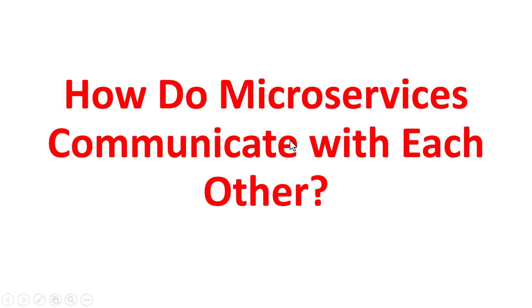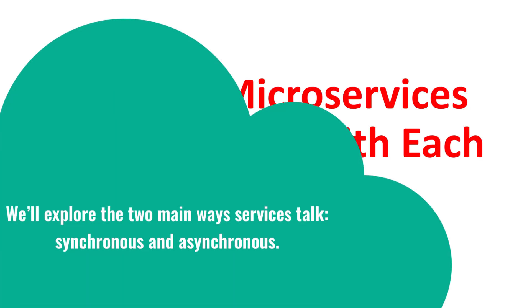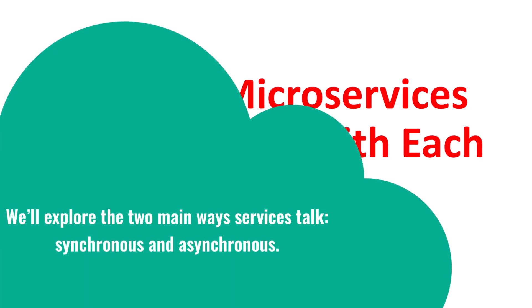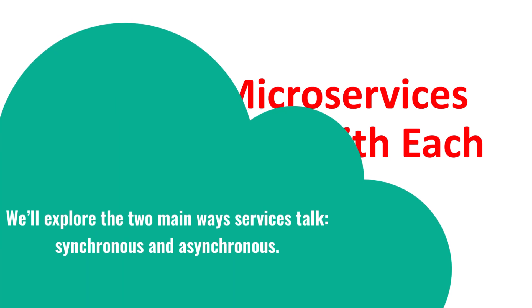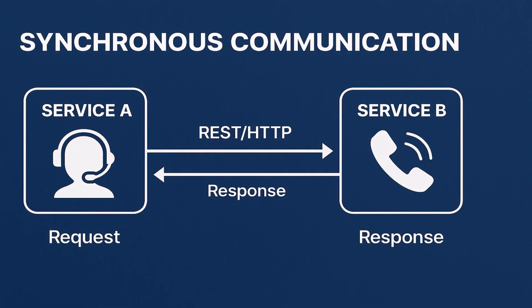How do microservices communicate with each other? We'll explore the two main ways services talk: synchronous and asynchronous. Let's begin with synchronous communication. In this approach, one service makes a direct request to another and waits for a response.